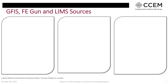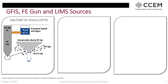Comparing the gas field ion source to a conventional field emission gun used by SEMs and the liquid metal ion source used by gallium FIBs: the GFIS tip is cryogenically cooled with pumped liquid nitrogen to 70–80 Kelvin. The virtual source size is less than 0.25 nanometers due to the atomic source, giving a probe size down to 0.3 nanometers. This source has very high brightness, low energy spread, and small wavelength, which minimizes diffraction effects.